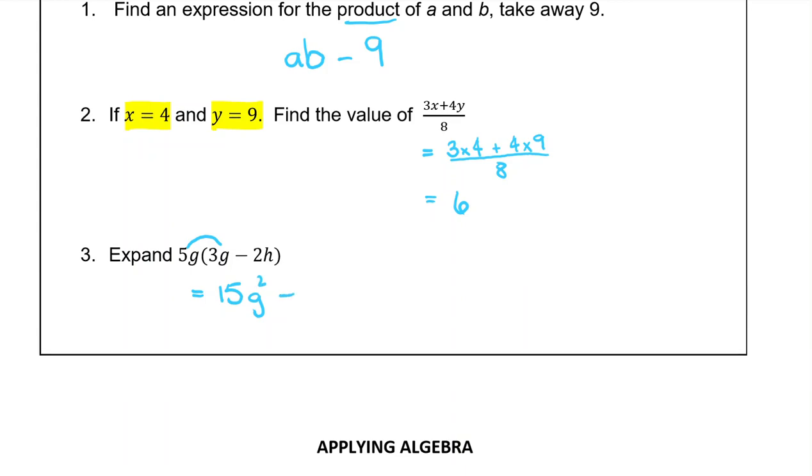Then we have a minus sign. 5G times minus 2H: 5 times 2 is 10. And then we have the G and the H sitting afterwards.